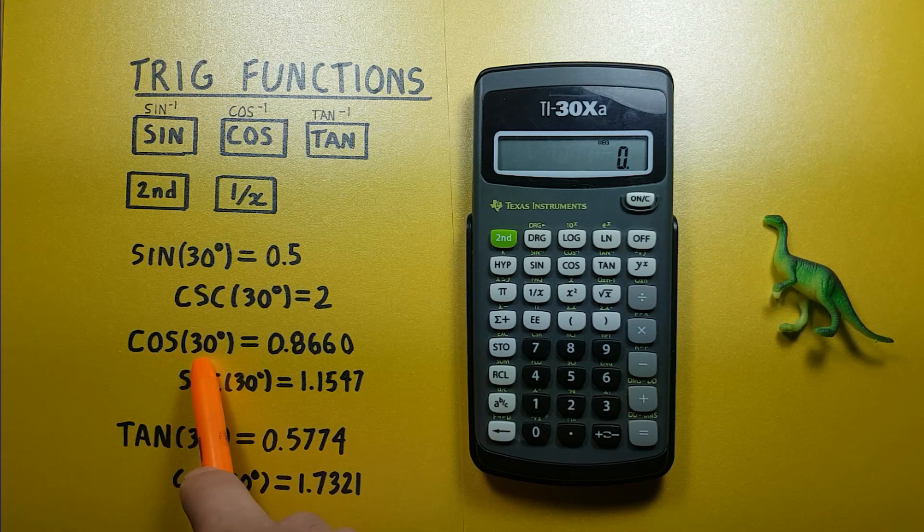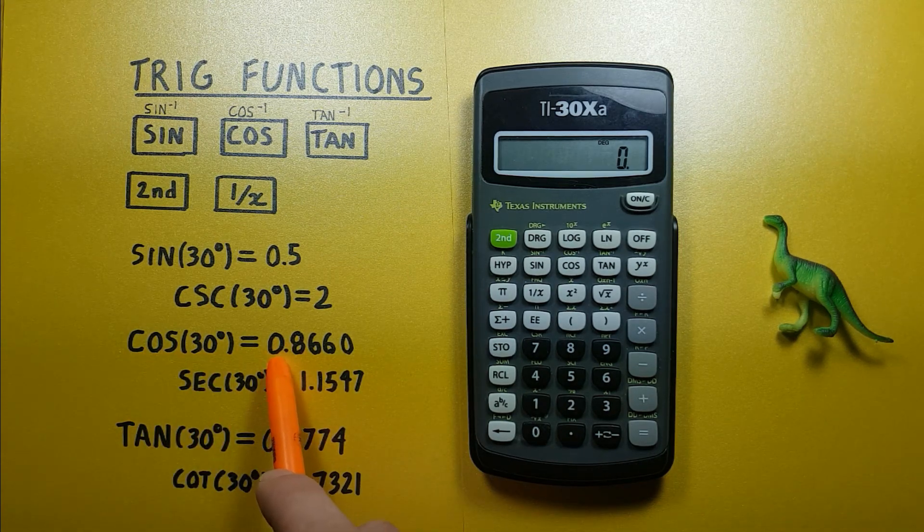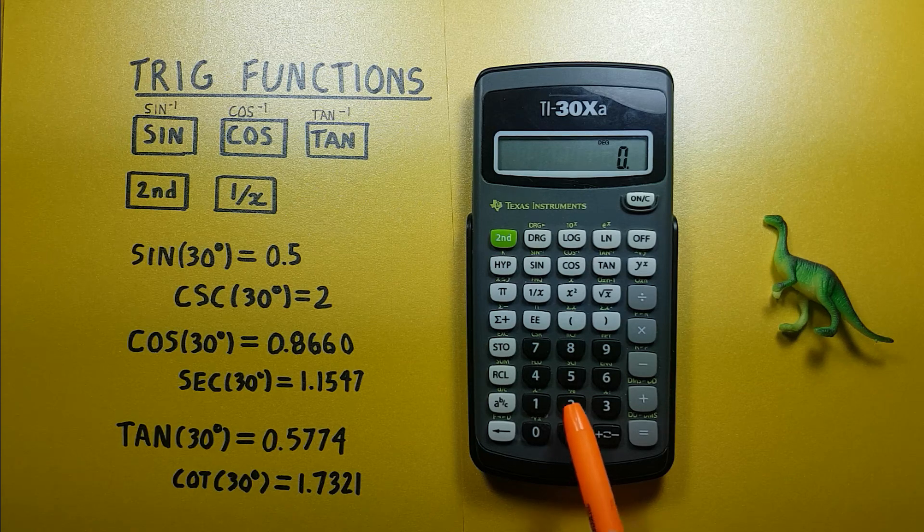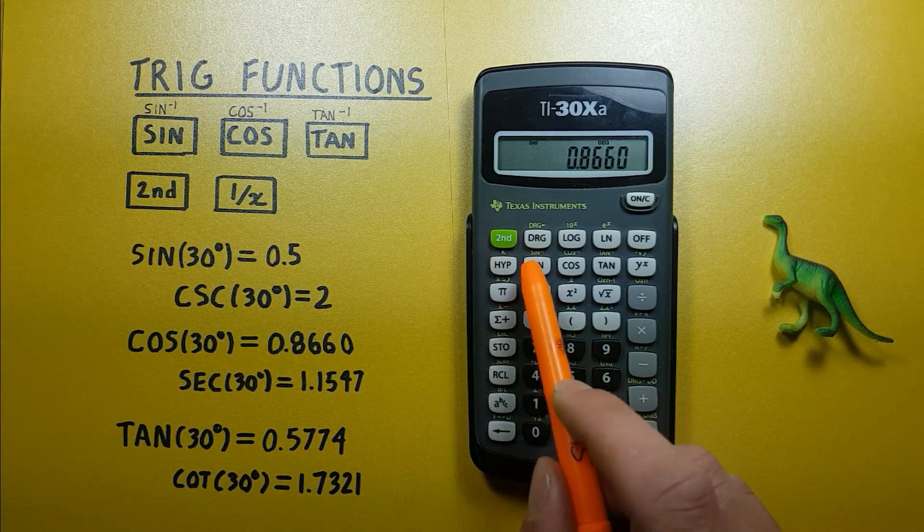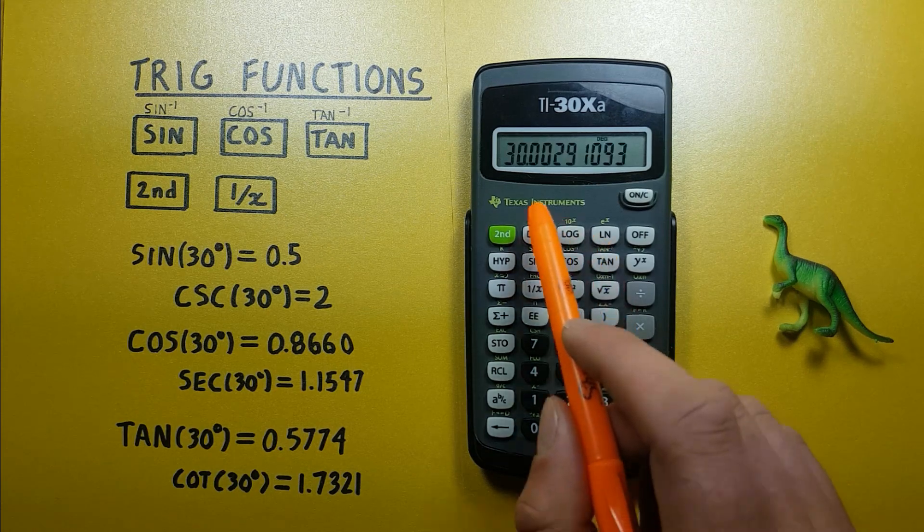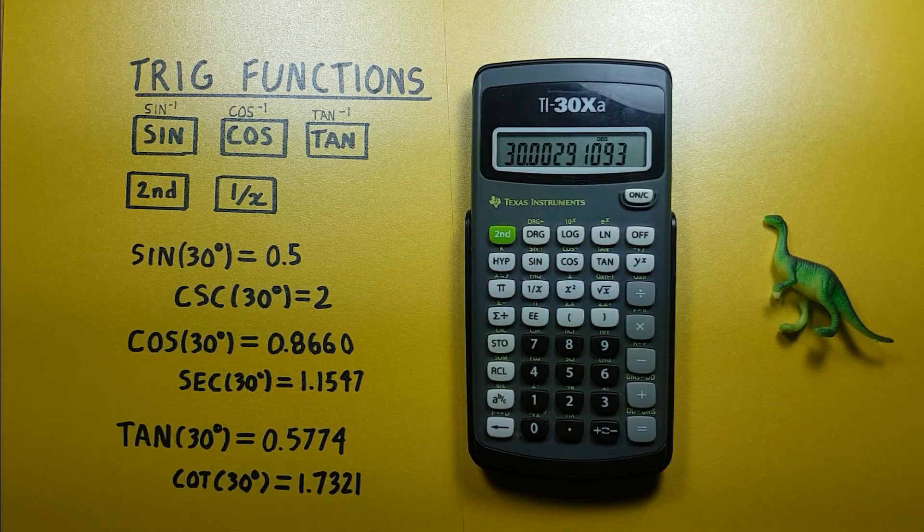Doing it with cosine, remember we got rounded 0.8660, so we put 0.8660 on the screen and then press second function cos, we get what would round to 30 degrees.